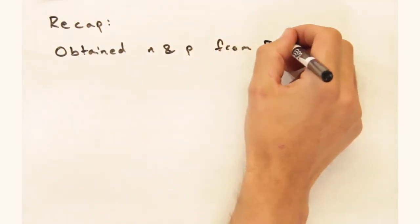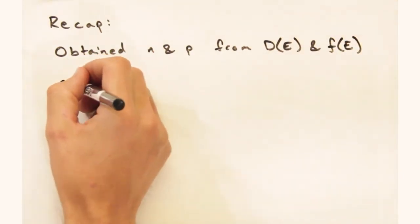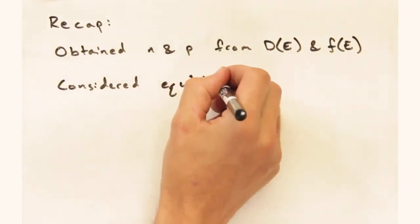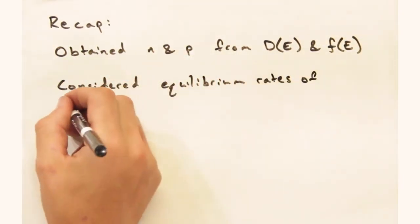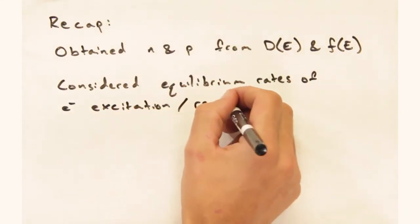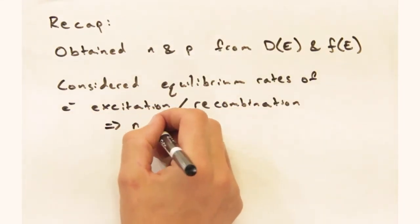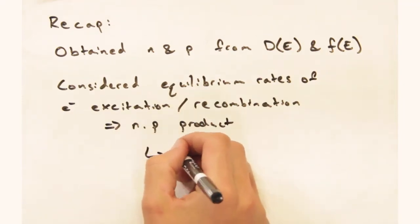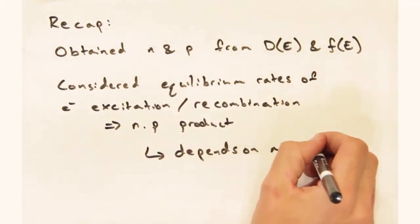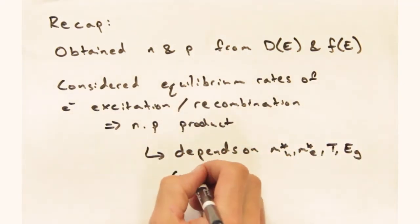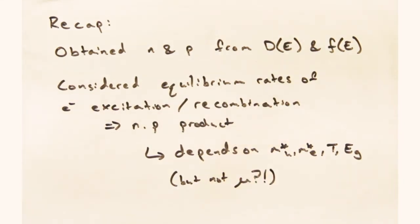So we used the density of states and the Fermi Dirac distribution to obtain an expression for the concentration of electrons in the conduction band and of holes in the valence band. And we connected these concentrations to an equilibrium process of excitation and recombination of electrons across the gap. This pointed us towards the n p product rule, which will prove useful in extrinsic semiconductors.